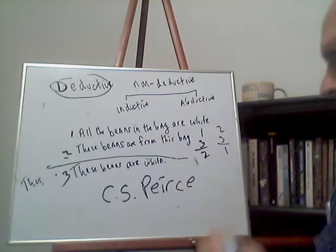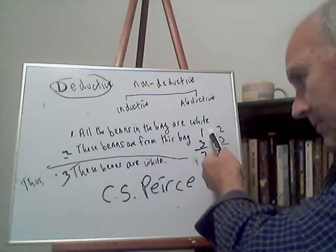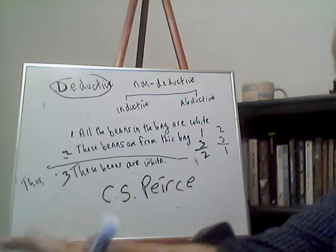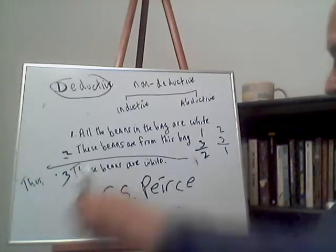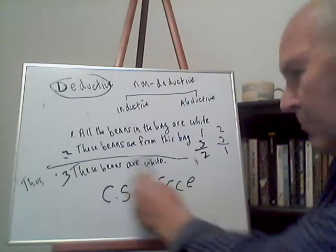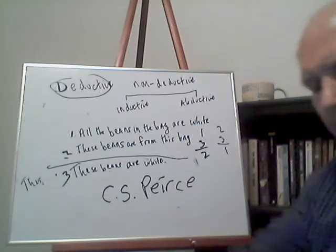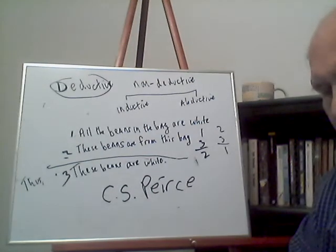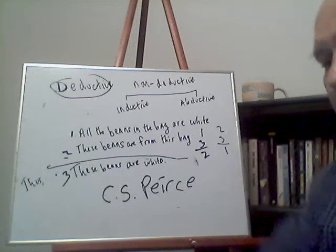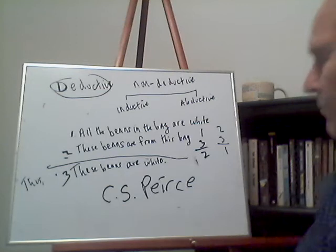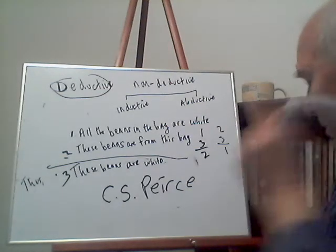For the second form, statements one and three are the premises, and statement two is the conclusion. So: all the beans in the bag are white, and these beans are white — from that we conclude that these beans are from this bag.